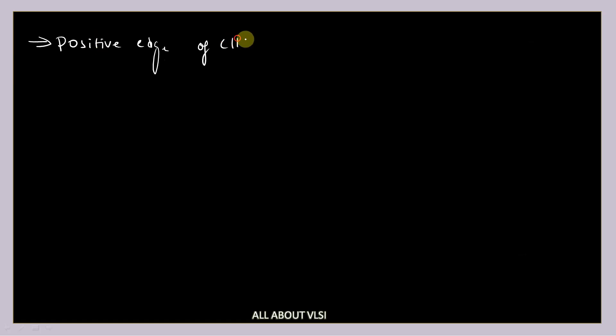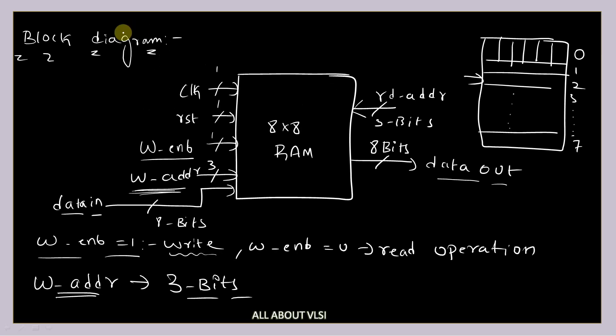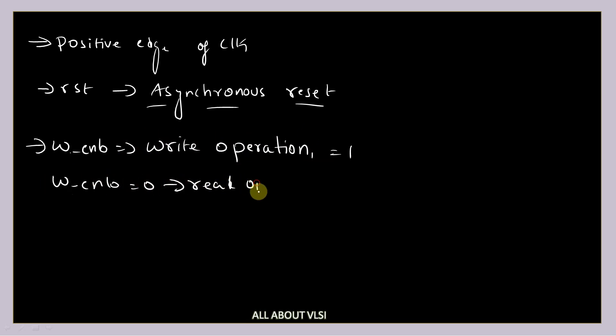Coming to specifications: my entire design works on the positive edge (rising edge) of the clock. The reset signal is an asynchronous reset, meaning if you apply reset irrespective of the clock, the design will be placed in a reset state. If write enable is equal to 1, a write operation is performed; if write enable is equal to zero, a read operation is performed.